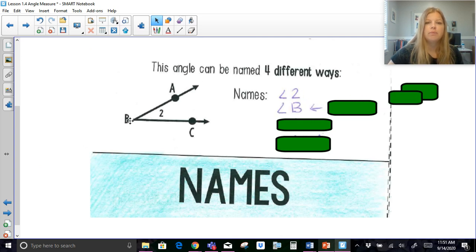So I have this angle symbol and then a two. I can also call it angle B. Now, the important thing is when you're naming a triangle based on an angle, it's always named by its vertex. So B is the vertex of this angle, so that's why I can call it angle B. So I can call this angle angle two. I can call it angle B.